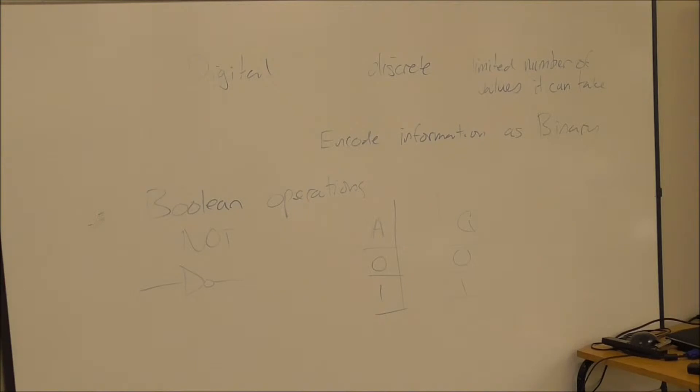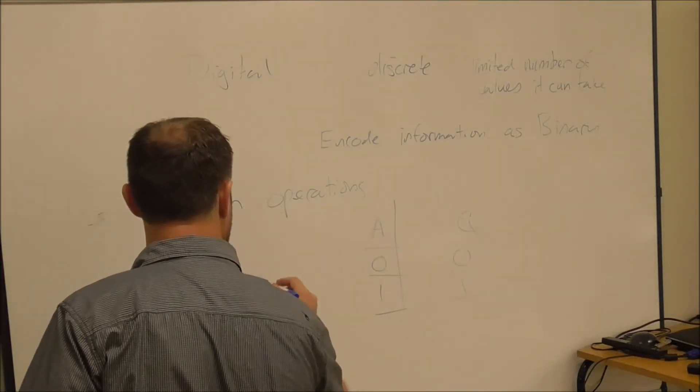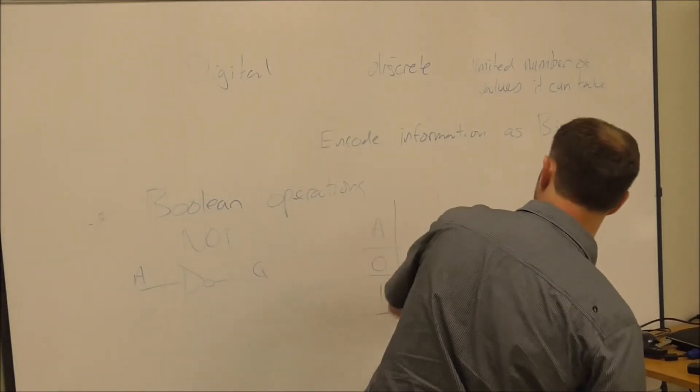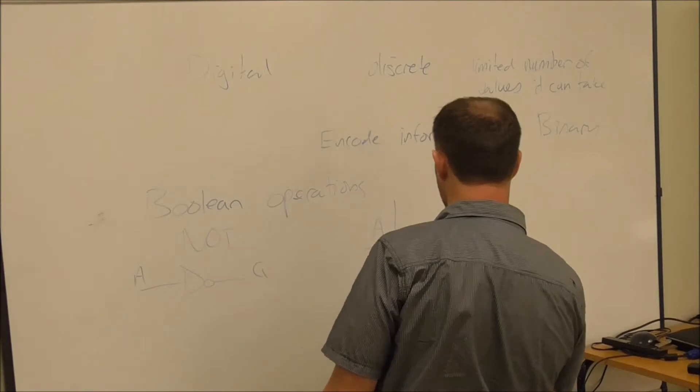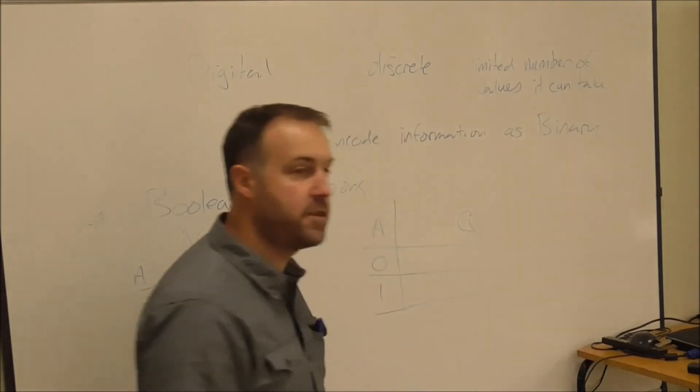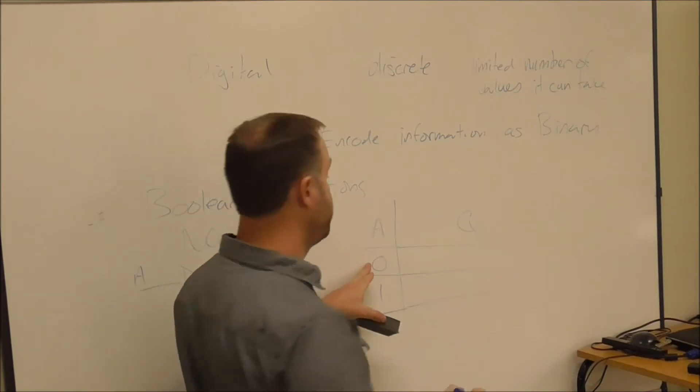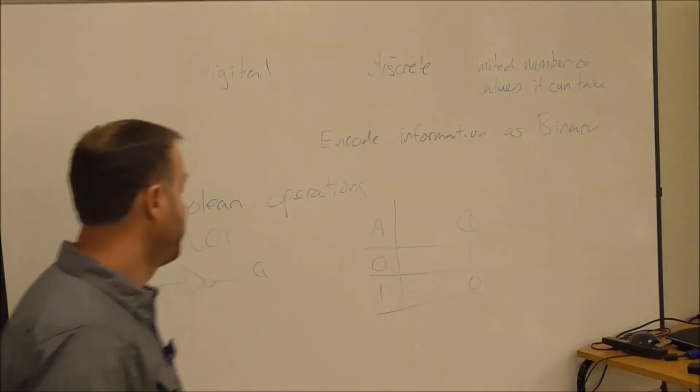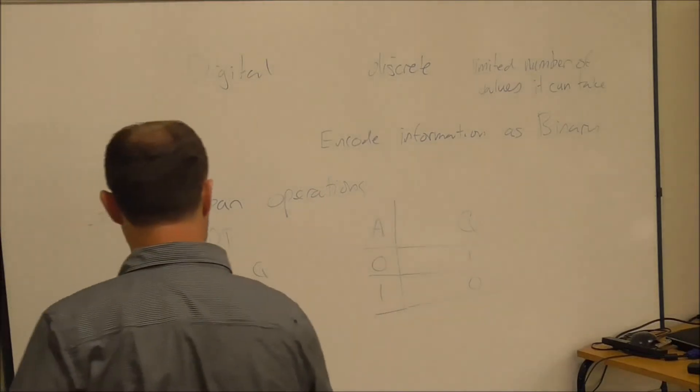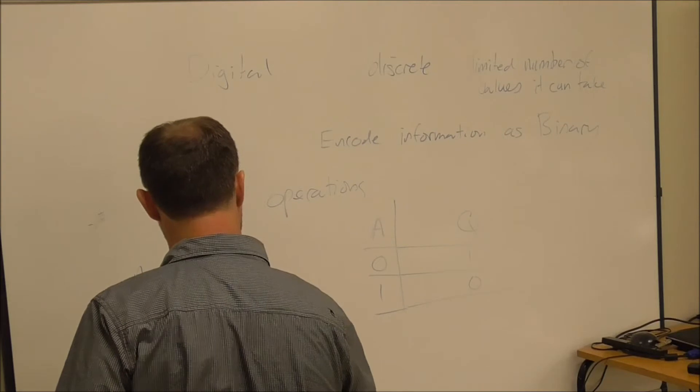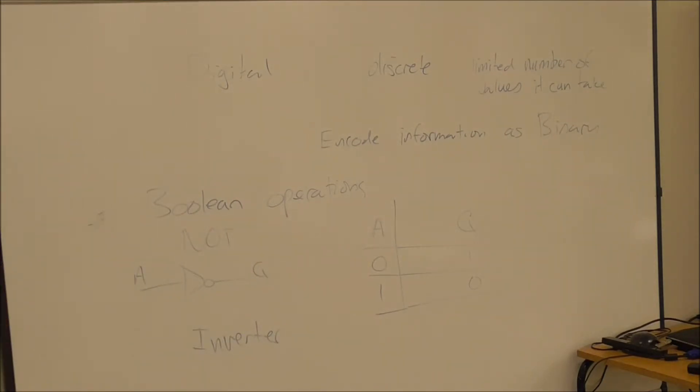A NOT takes an input and produces an output, which is not what the input was. So if the input was true, then the output must not be true, which is false. If the input is one, a zero, the output can't be zero. And the only other option it's got is one. This has a special name as well. It's called an inverter. So an inverter is a type of circuit that whatever the input is, it flips it to the other, whatever the other state is. If the input is logic high, it'll make the output be whatever's opposite to that input logic state.